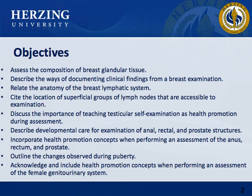Additional objectives include: describe developmental care for examination of anal, rectal, and prostate structures; incorporate health promotion concepts when performing an assessment of the anus, rectum, and prostate; outline the changes observed during puberty; and acknowledge and include health promotion concepts when performing an assessment of the female genitourinary system.